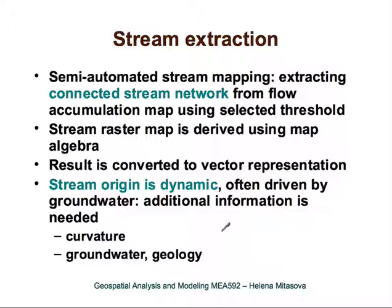In the second section of the lecture on flow routing and watershed analysis, we will talk about stream extraction and watershed boundaries. Stream extraction is used for semi-automated stream mapping. It is designed to extract connected stream networks from flow accumulation, which is derived from digital elevation models using different approaches — for example, a selected threshold of flow accumulation.